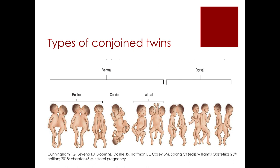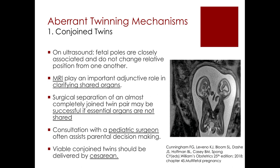There are two types of conjoined twins: those connected ventrally — which can be connected rostrally, caudally, or laterally — and those connected dorsally. On ultrasound, the fetal poles are very closely associated and do not change relative position from one another. MRI plays an important adjunctive role in clarifying shared organs. Surgical separation may be successful if essential organs are not shared, and viable conjoined twins should be delivered by cesarean section.